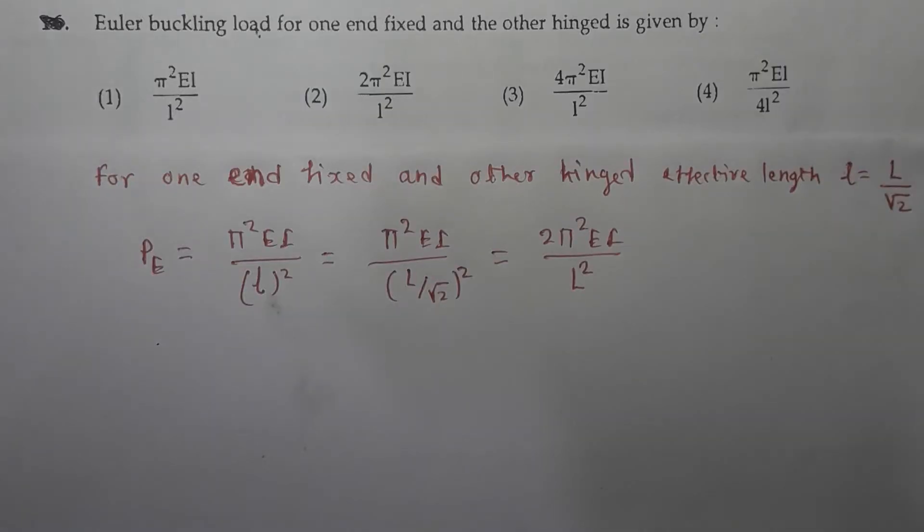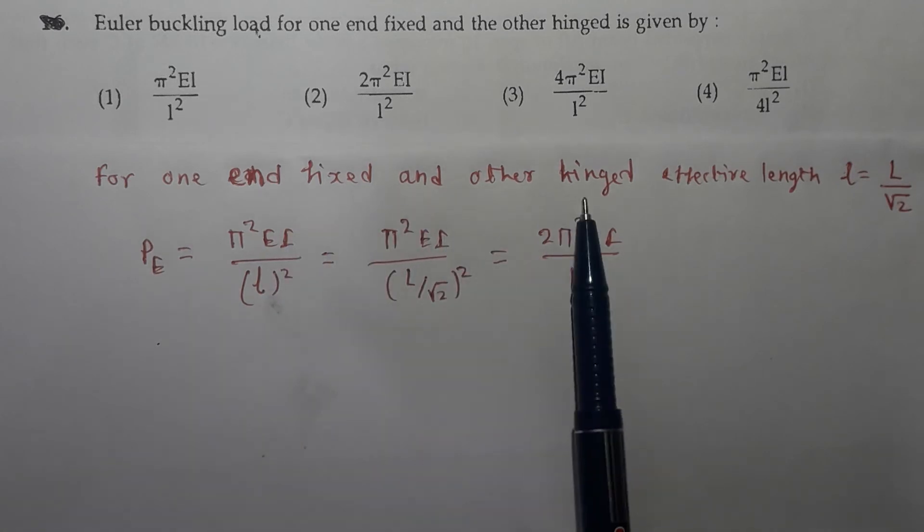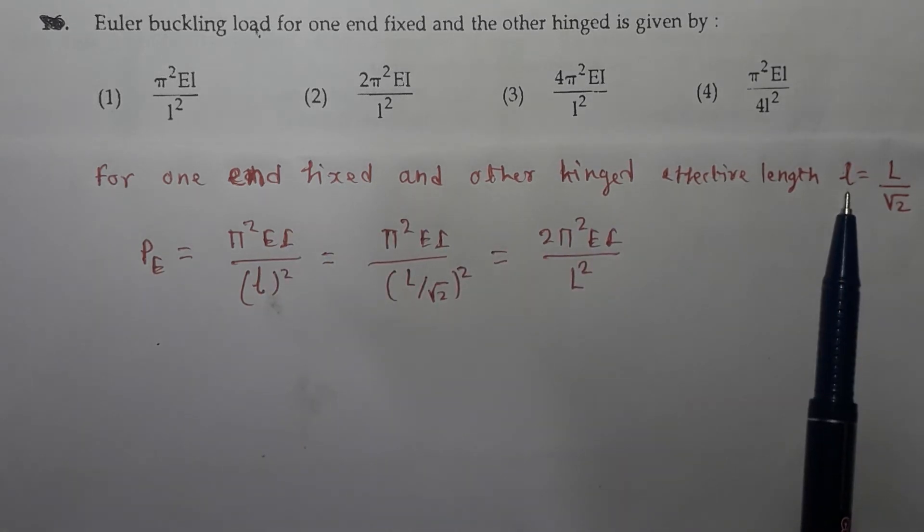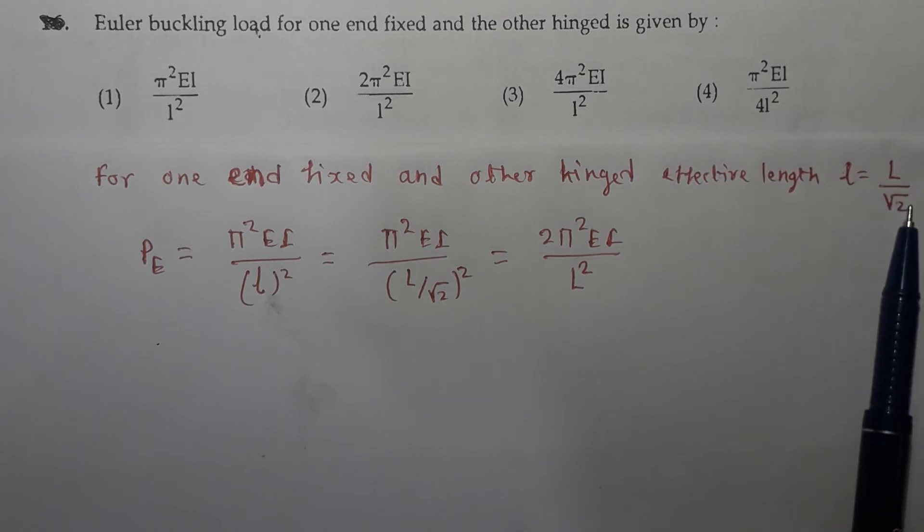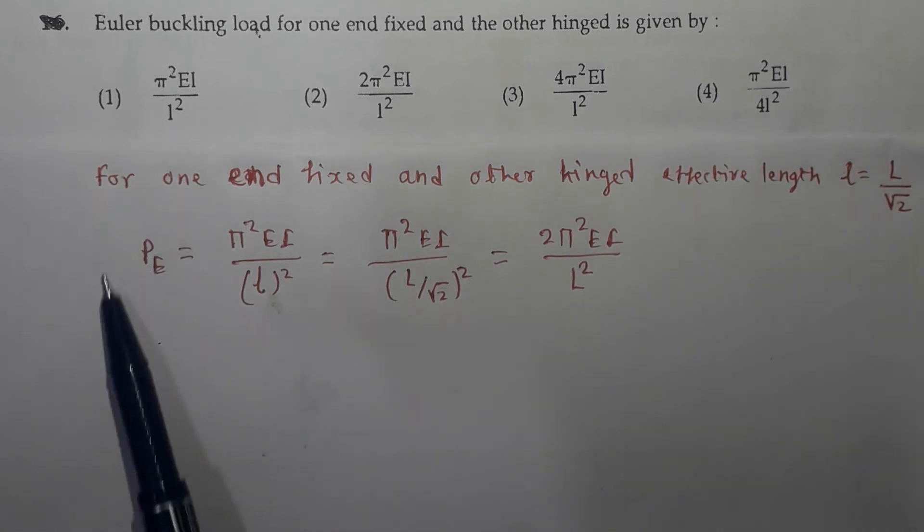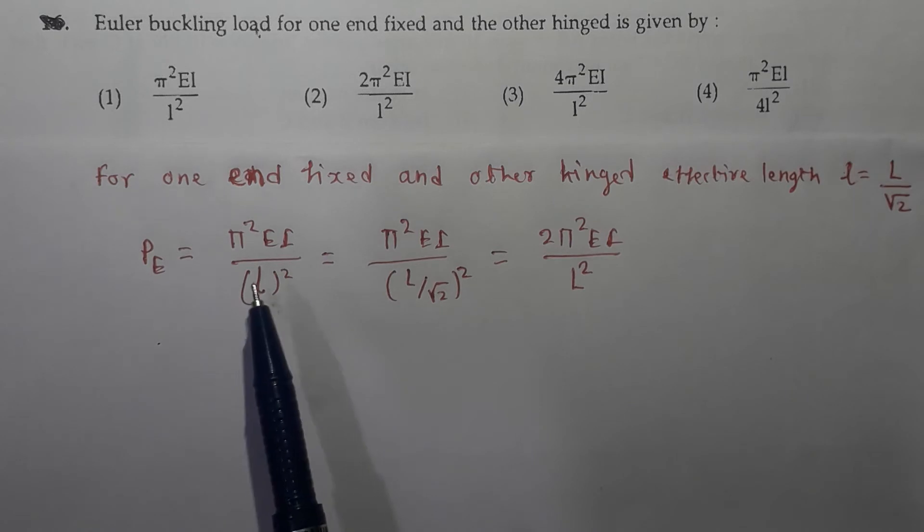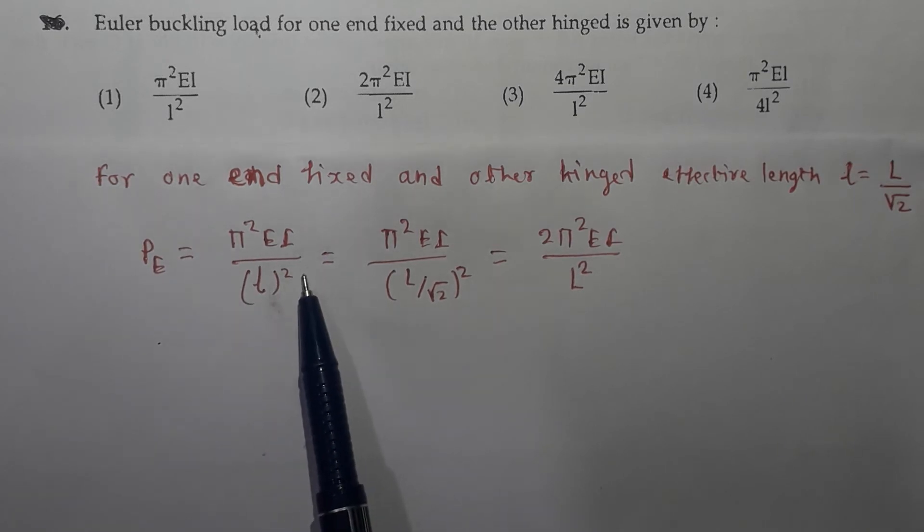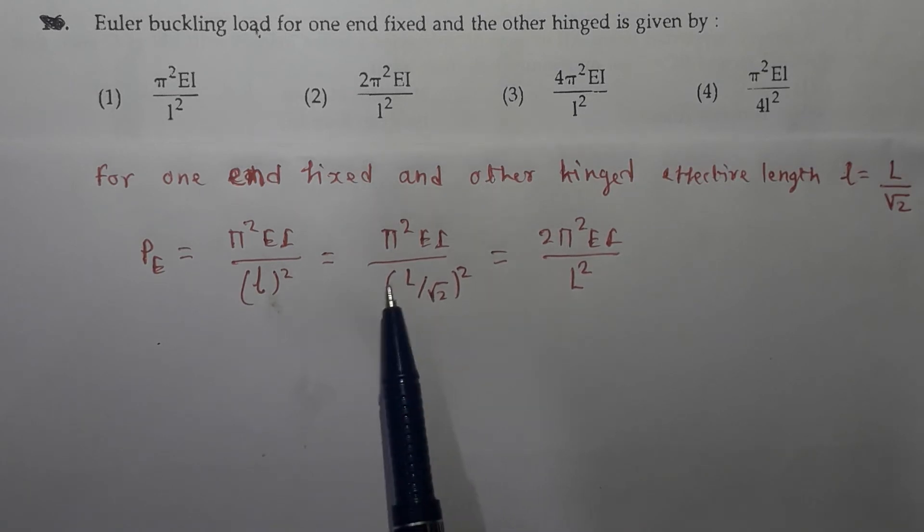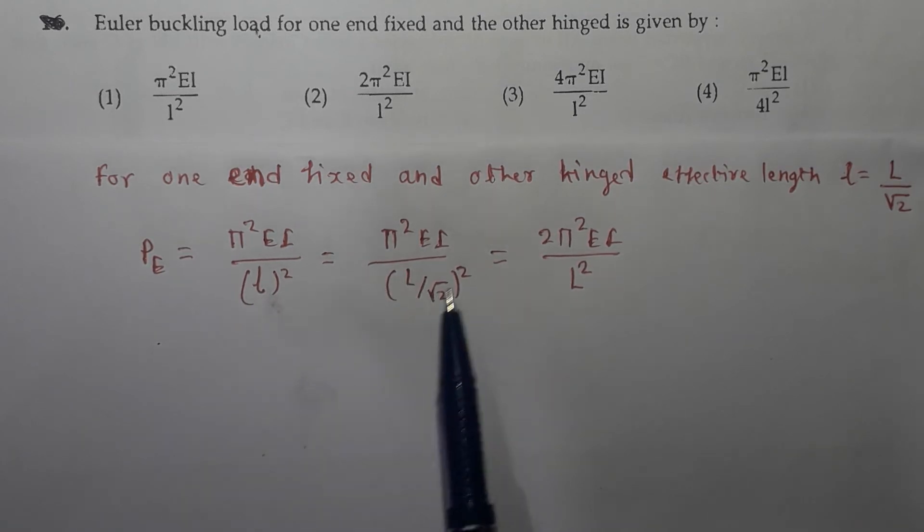Next question: Euler buckling load for one end fixed and the other hinged is given by. Now we know that for one end fixed and the other hinged, effective length L equals L by root 2. Whereas Euler's load, the formula is PE equals pi square EI upon effective length square. Now this effective length can be substituted as L by root 2. So L square will become L by root 2 square.